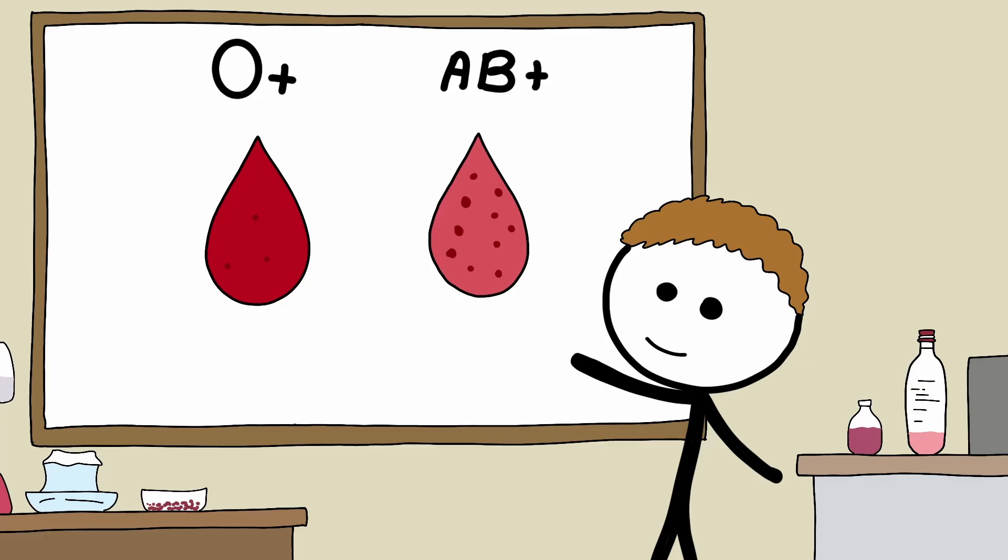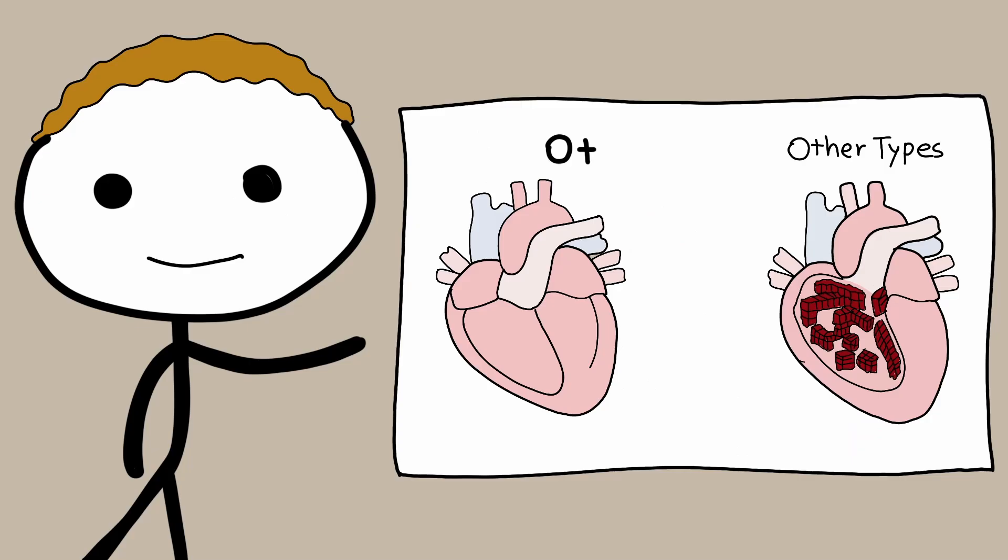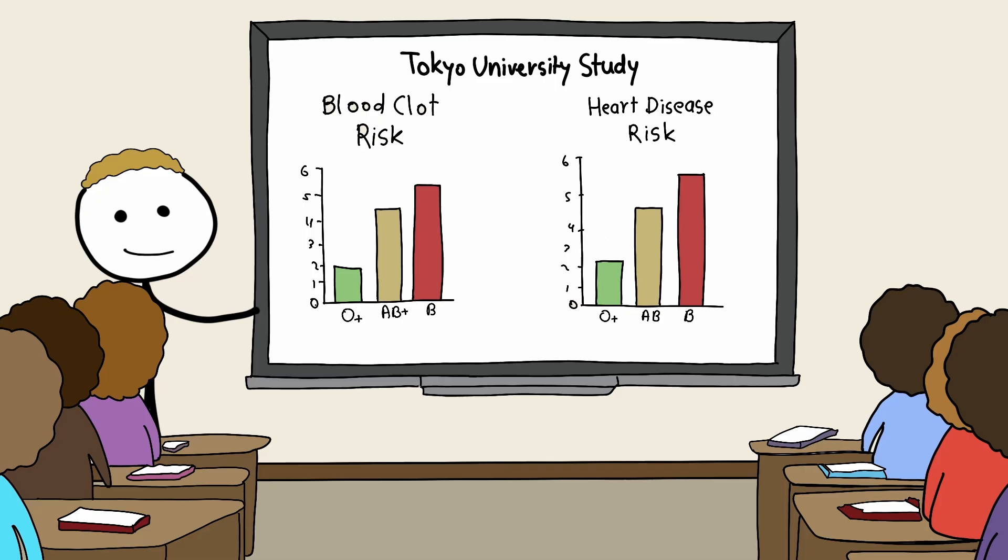Here's where it gets fascinating. O-positive blood naturally has lower levels of clotting proteins, which reduces the risk of heart attacks and strokes. Studies from Harvard and Tokyo University have shown that O-type carriers are less prone to blood clots and cardiovascular disease.